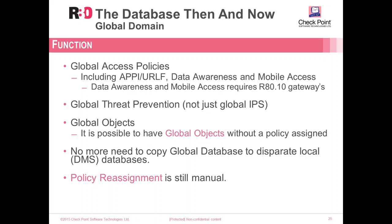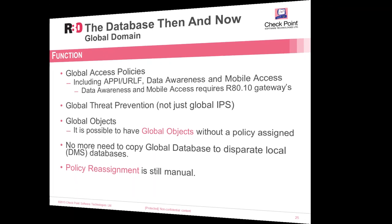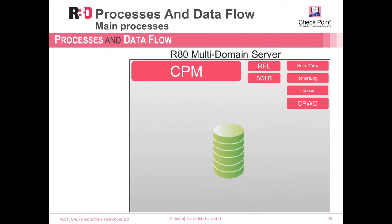When doing changes inside the global domain, policy reassignment is still required, and it's still a manual process that needs to be done from the MDS environment. The main processes inside the multi-domain server of R80 are: CPM as the main process, RFL and SOLAR for indexing, SmartLog Indexer, CPWD, MDS, FWM, FWD, CPD, and CPHA — similar to what we had on pre-R80 management servers.